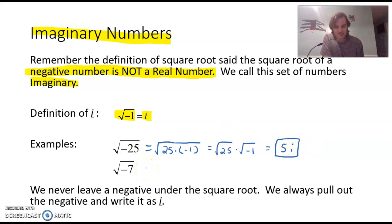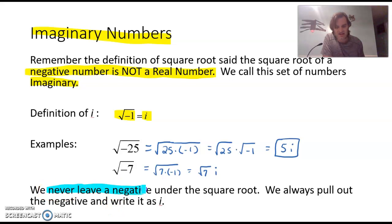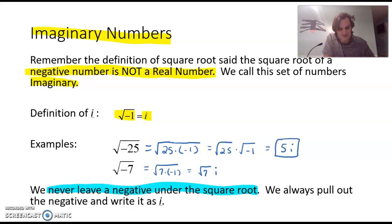The second example is the square root of negative 7. We would say the same thing — change that to the square root of 7 times negative one, and separate those. Because 7 does not have a nice square root, we'd leave it as the square root of 7, but we can write that negative one outside as an i. So we never leave the negative under the square root — that's part of our simplification properties. We always pull it out and write it as i.